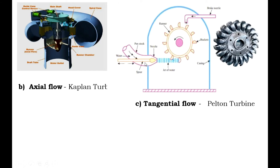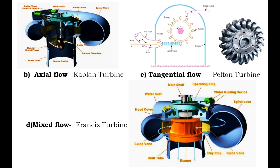The next type is the Pelton wheel, also called the impulse turbine. The Pelton turbine is a tangential flow impulse turbine where water strikes the buckets along the tangent of the runner. The energy available at the inlet and outlet is only kinetic energy, and the pressure at both inlet and outlet is atmospheric. This turbine is used for high heads. A jet of water at high velocity from the nozzle strikes the bucket at the center of the cup. The impulsive force of the jet causes the rotation of the wheel. The Pelton wheel operates under high head, therefore it requires less quantity of water. Draft tubes are not usually used with this type of turbine.